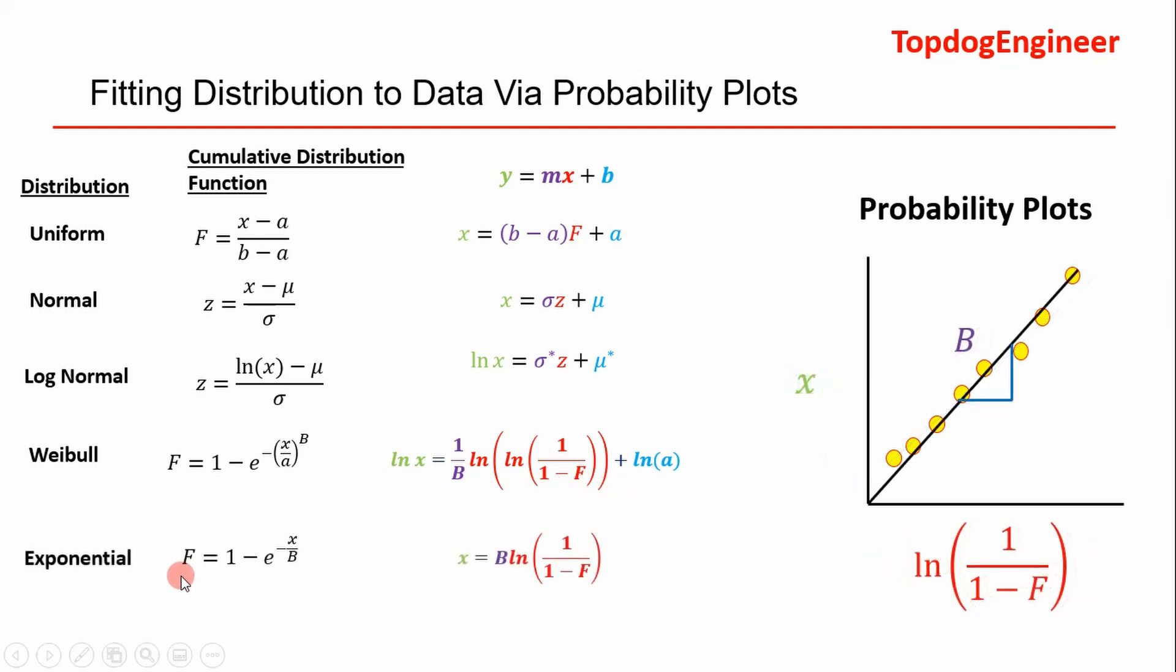For exponential we can do the same thing. So you understand what's going on here—basically we're putting everything in y equals mx plus b form to get it on the same playing field, and then we can see which distribution best fits the data. You can see here for exponential, the only thing that changes here is our b is equal to zero, so it goes through the origin.